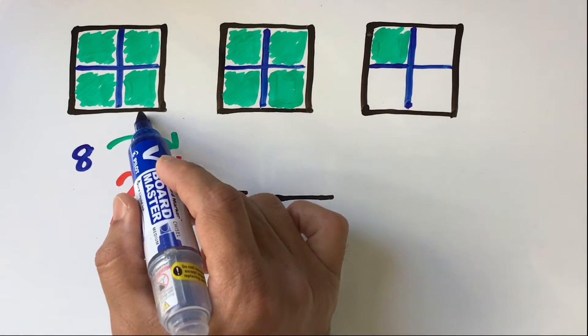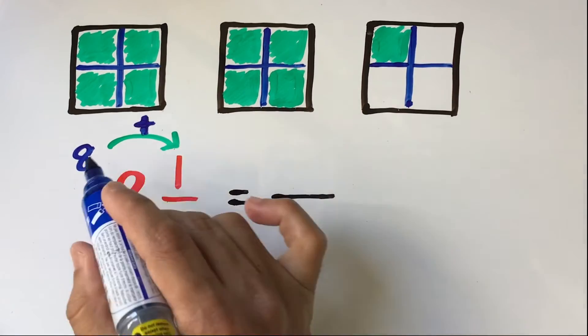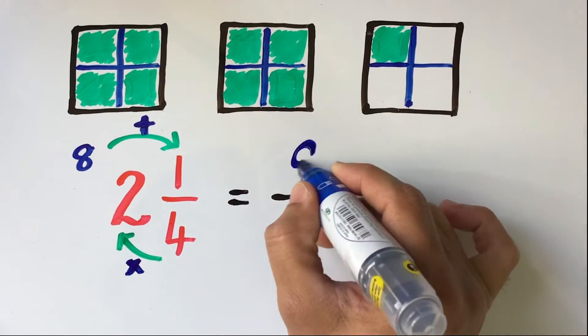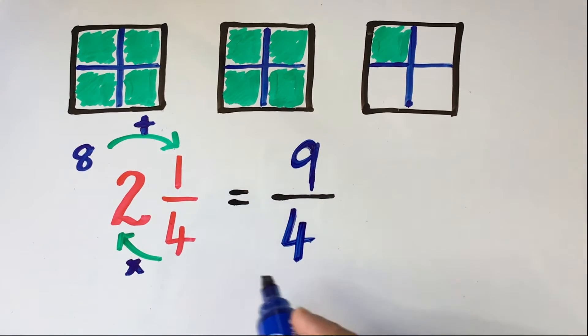And then we add the result with the top number or the numerator of the fraction. In this case, 8 plus 1, which gives us 9. In the second step, we keep the denominator of our improper fraction the same as the denominator of the mixed fraction.